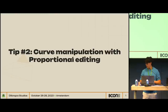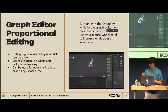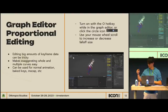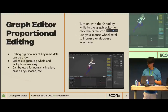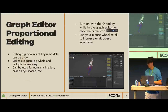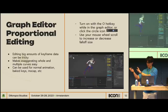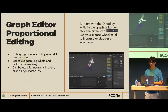My second tip is curve manipulation with proportional editing. You can turn on proportional editing in the graph editor with the O key, and it lets you move keyframes around with falloff. You just increase or decrease the falloff with your scroll wheel. This lets you very easily edit big bulks of data — for example, if you're doing baked animation or mocap. Here I have a character run cycle, but I want the chest to start more exaggerated, lean down, then overshoot into the upper pose and settle. You can very quickly modify big bulks of data like that.